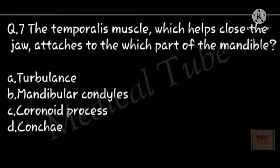Seven number question: the temporalis muscle, which helps close the jaw, attaches to which part of the mandible? Correct answer is C, coronoid process.